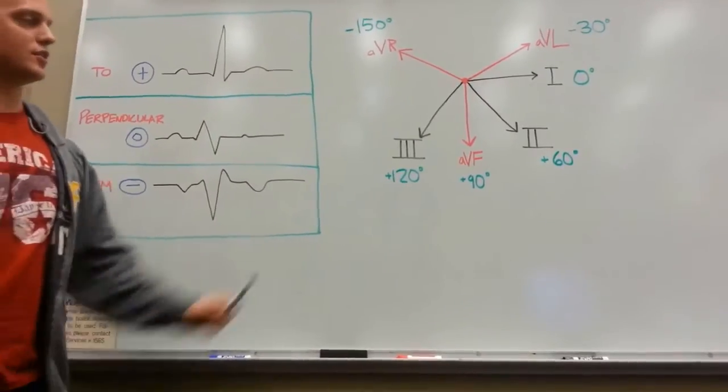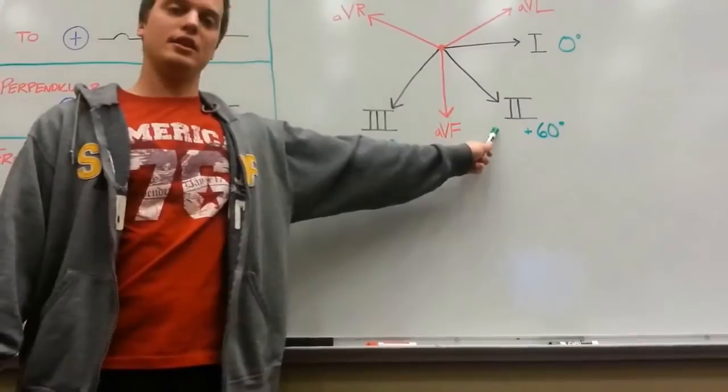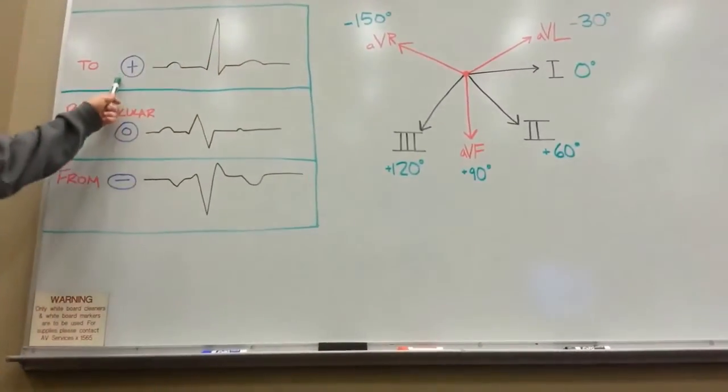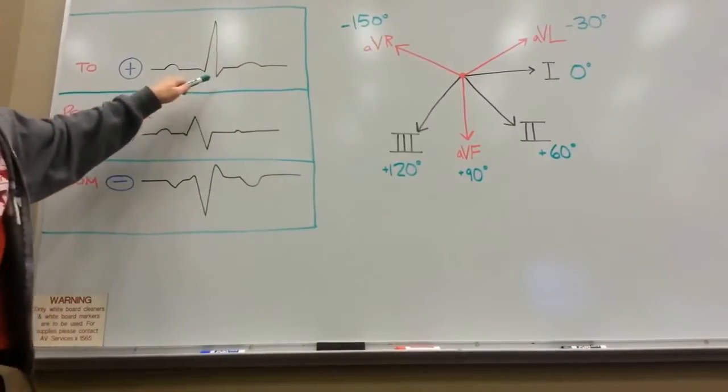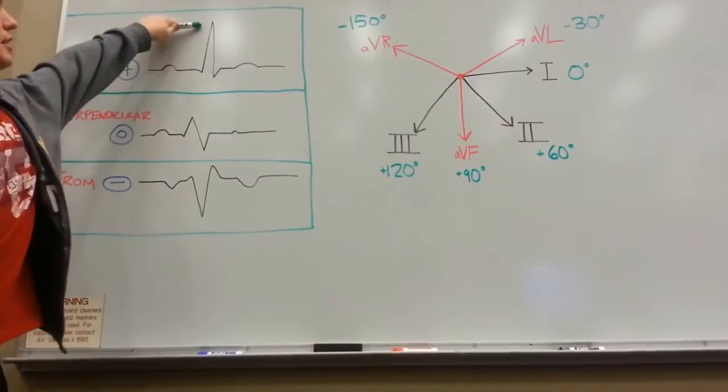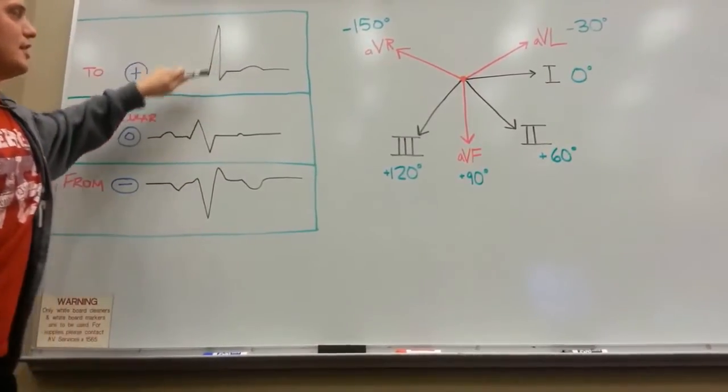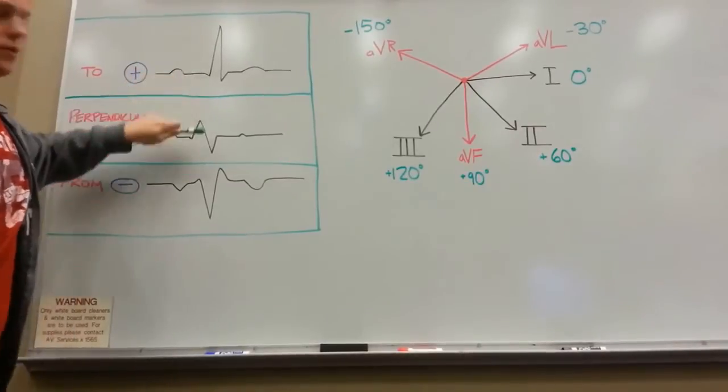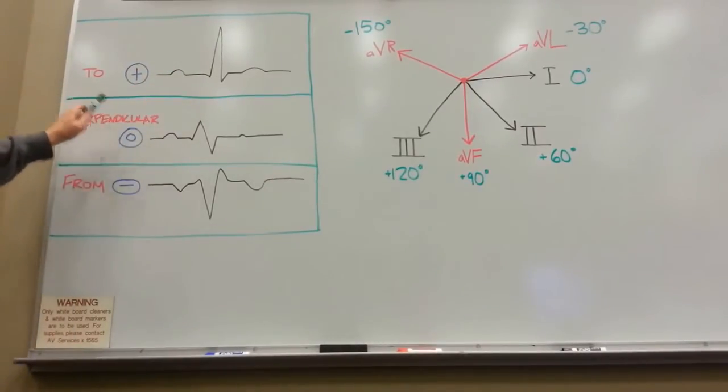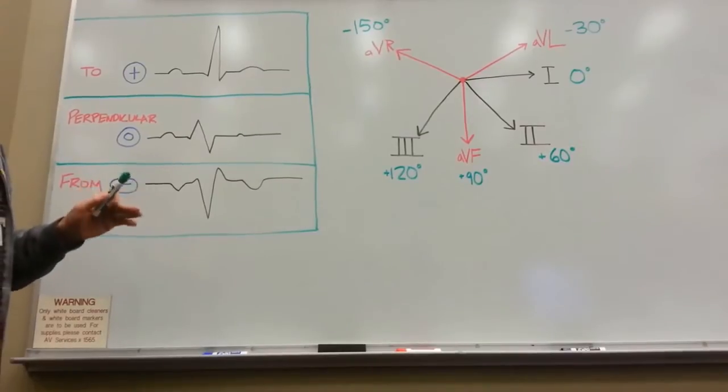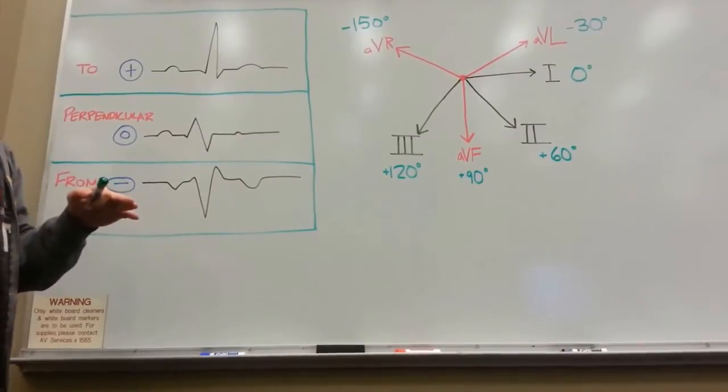If your lead, let's say lead number two, is positive, which means that your QRS complex is clearly above the baseline, is clearly a positive deflection, and it is much higher than it is lower on your ECG, then you'll know that your mean electrical axis will be traveling parallel to that lead.